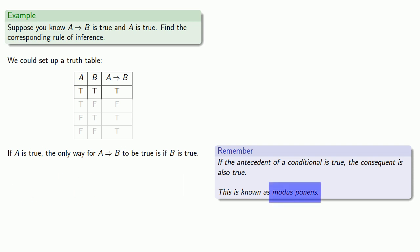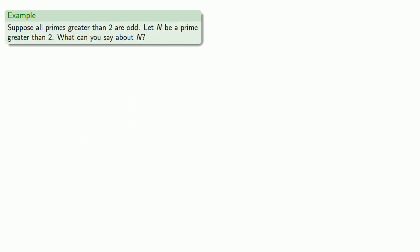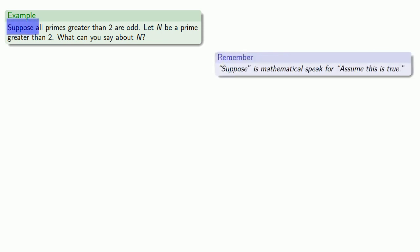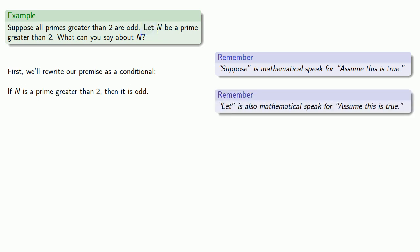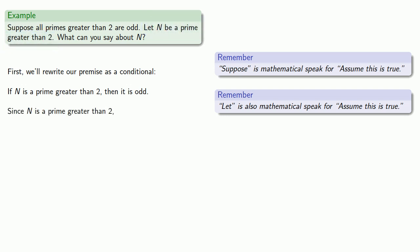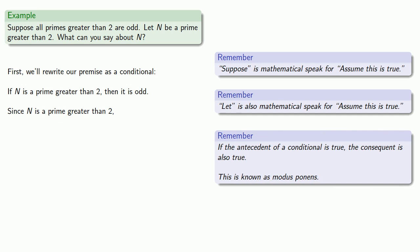This particular rule of inference is known as modus ponens — one of those Latin names occasionally used for the rules of inference. For example: suppose all primes greater than 2 are odd, and let N be a prime greater than 2. We rewrite our premise as a conditional: if N is a prime greater than 2, then it is odd. N is a prime greater than 2 is the antecedent of our conditional. Since the antecedent is true, the consequent is also true — so we can conclude that N is odd.